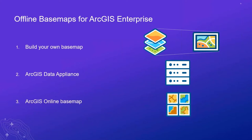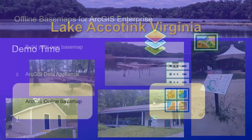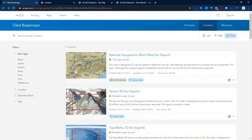There's also a third option to use ArcGIS Online base maps. Many people have a hybrid approach for the ArcGIS platform — both ArcGIS Enterprise and ArcGIS Online. For our demonstrations, we are at Lake Akatink in northern Virginia outside of DC. Nobody's in these pictures because they were taken during the COVID lockdown, but there are facilities including paddle boats once the park reopens. Let's look at creating and enabling the ArcGIS Online base map in our enterprise for offline use.